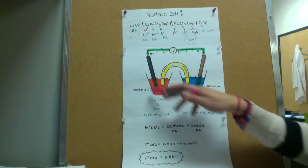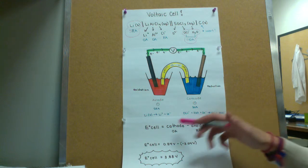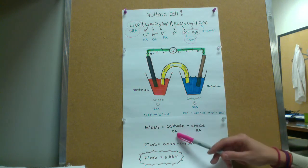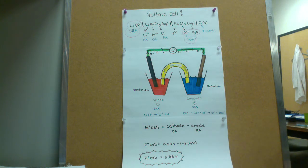Overall, we have a consistent system going on. If we calculate the cell potential, we calculate it using cathode minus anode, or oxidizing agent minus reducing agent. We calculate the cell potential to be 3.88 volts, which is enough energy to power any small piece of equipment.